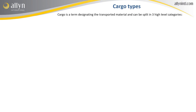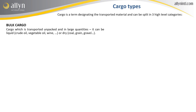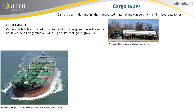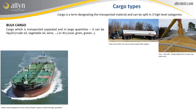The term cargo designates the transported material, and the latter can be split into three high-level categories. First, we find the bulk cargo — cargo which is transported unpacked and in large quantities. It can be liquid, for example crude oil, vegetable oil, wine, fruit juice, liquefied gas, and so on. Or it can be dry,